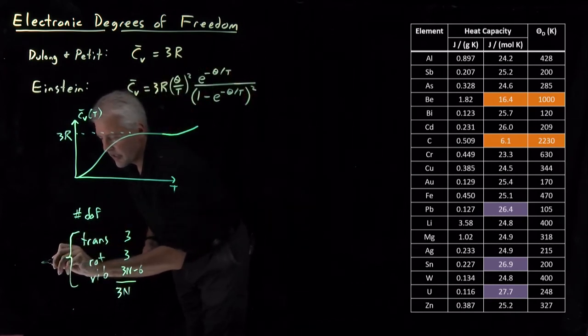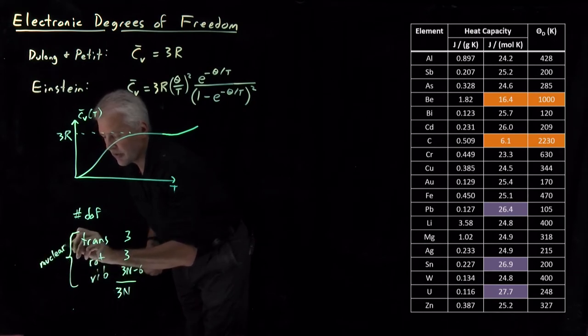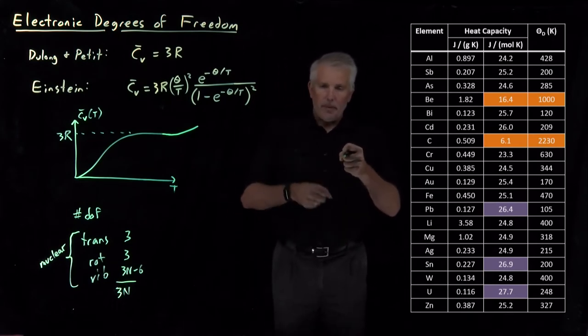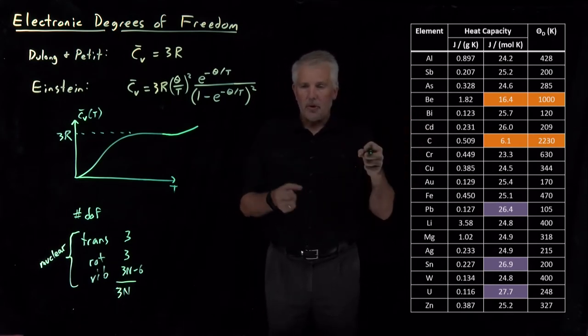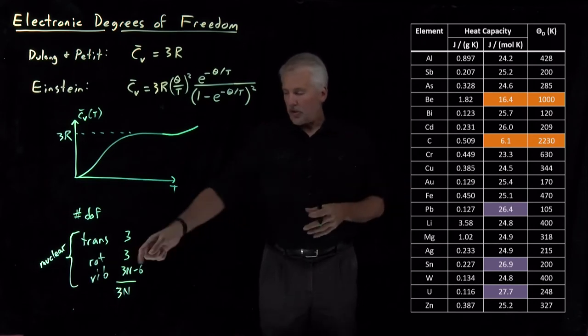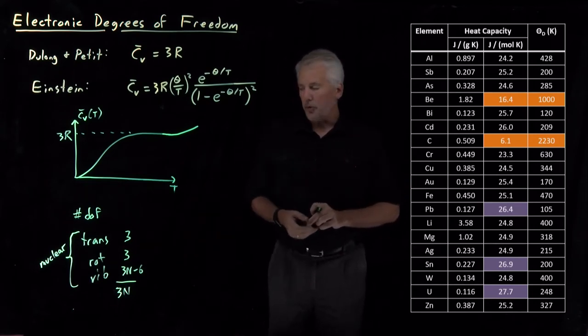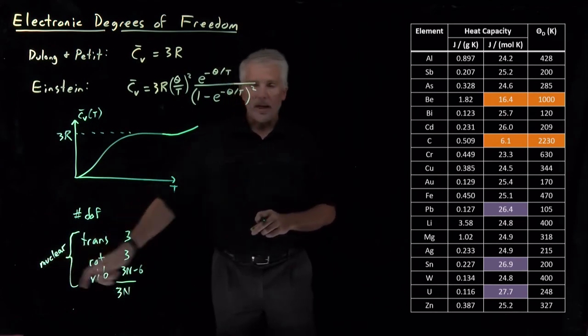So these degrees of freedom that we've discussed so far, those are the atomic degrees of freedom, the motion of the nuclei. I call those the nuclear degrees of freedom because if I pick an atom up and I move it around, if I translate the atom or if I rotate the crystal or if I vibrate, cause a vibrational motion by moving atoms relative to each other, those are all moving the nuclei of the atoms.